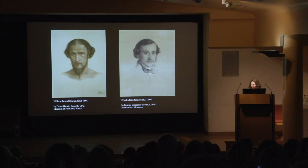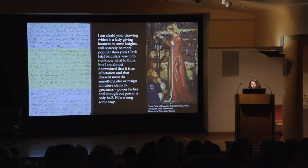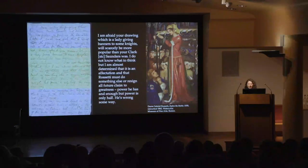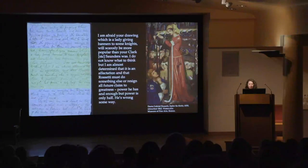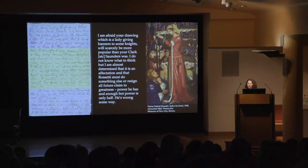Stillman wrote: 'I am afraid your drawing, which is a lady giving banners to some knights, will scarcely be more popular than your Clark Saunders was. I do not know what to think, but I am almost determined that it is an affectation and that Rossetti must do something else or resign all future claim to greatness. Power he has and enough, but power is only half. He's wrong some way.'